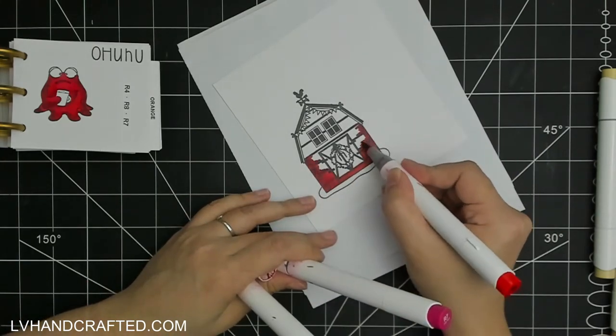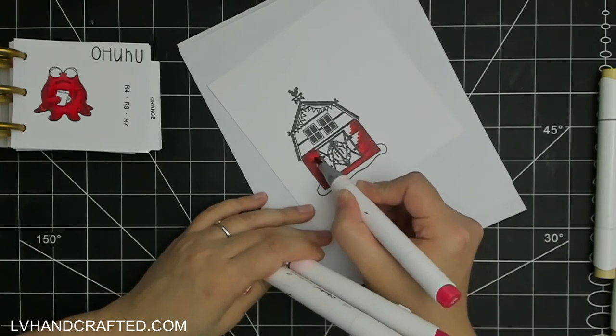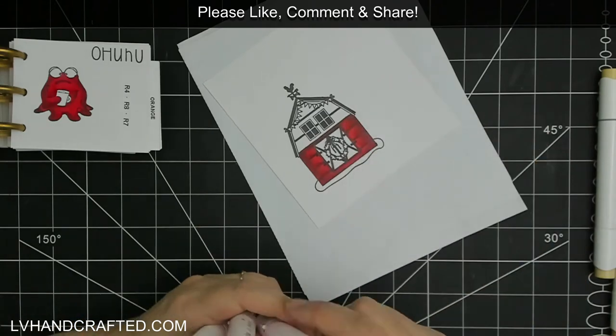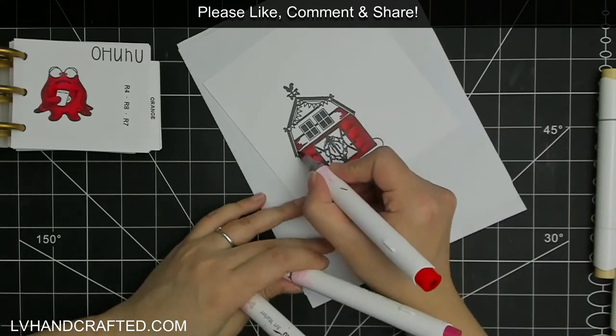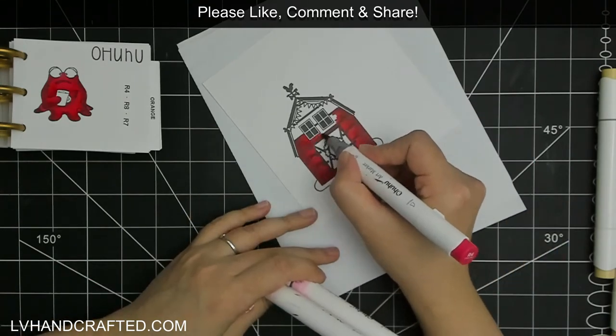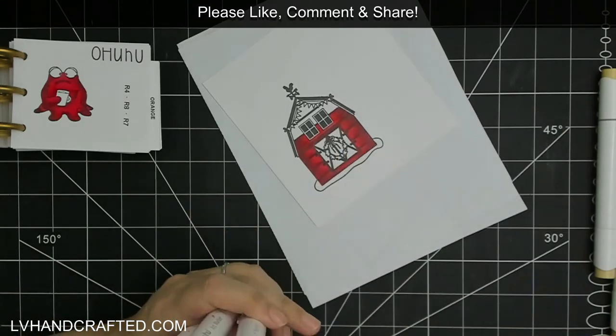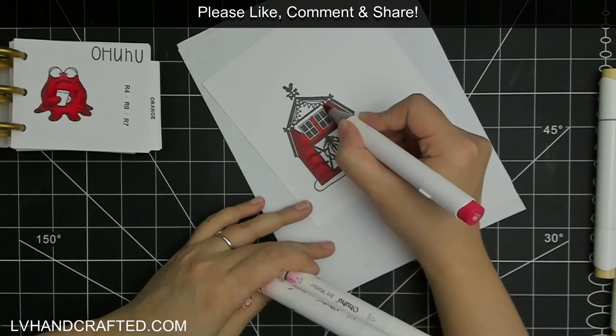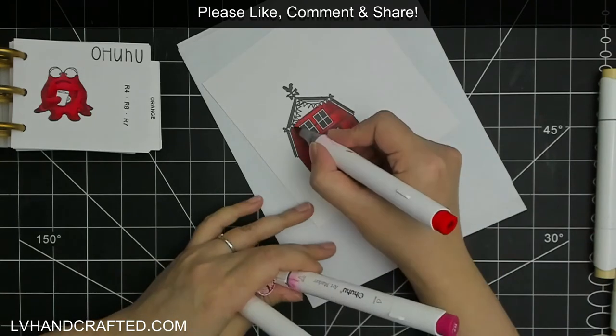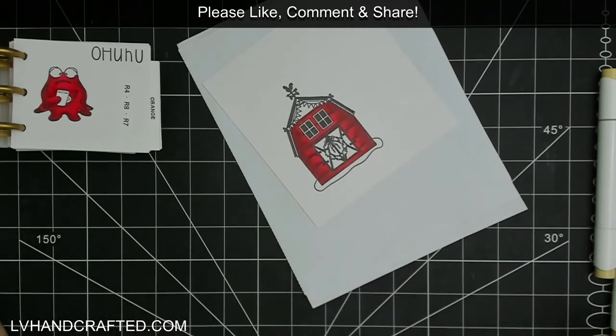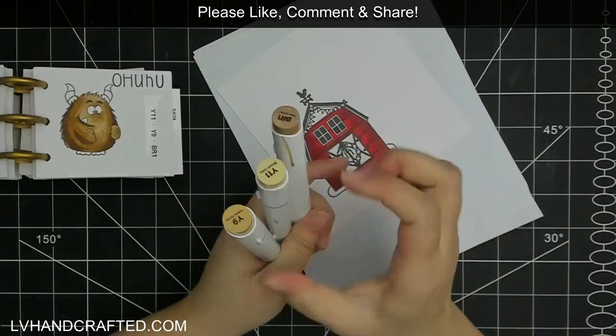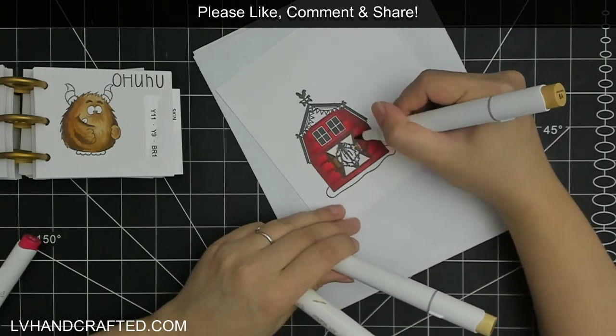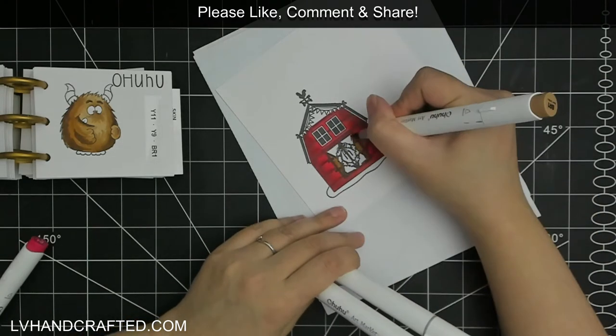I think it's mainly because they are very affordable, and as an entry point into alcohol marker coloring, they were the first markers that I colored with. I think when you have familiarity and practice with any medium, you tend to get better as time goes on. So I actually think I find these are my favorite markers to color with. I have a small and growing collection of Copic markers, but I'm just so used to the Ohuhu markers now that I actually tend to get a better result when I color with them.